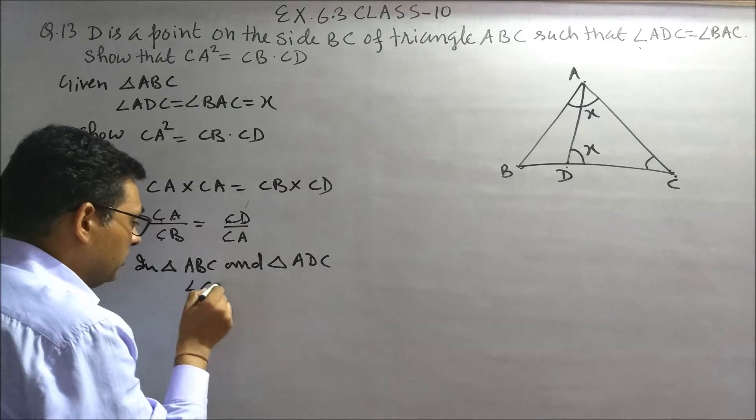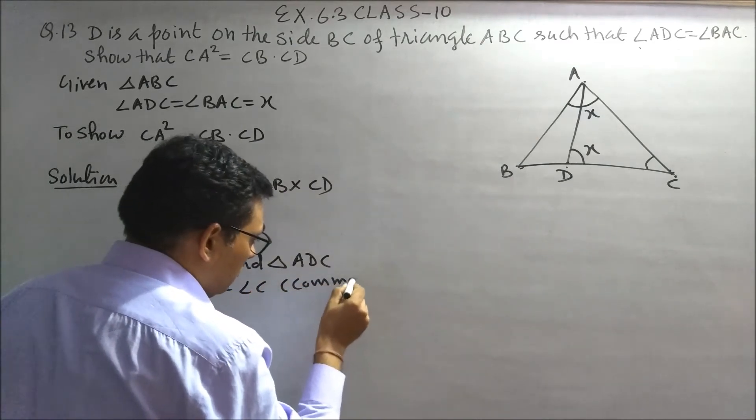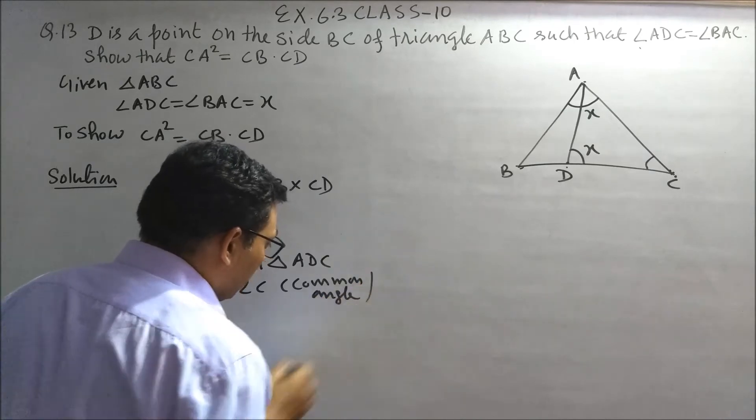Angle C is equal to angle C, common angle for both triangles.